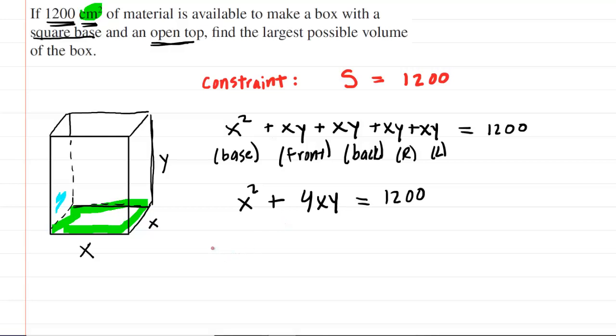Now, after getting the constraint equation, your next goal is to determine the objective equation. And that's going to be based on whether you're trying to minimize or maximize a certain quantity. In this case, we're looking for the largest possible volume. So that is our objective, to make the volume as large as possible. Therefore, we're going to write out a volume equation. You may recall that the volume of a three-dimensional box is length times width times height. So you would have X times X times Y, which we can condense into X squared Y.